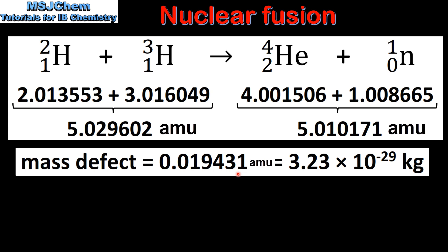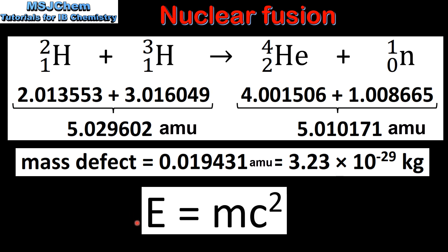This mass defect is given in unified atomic mass units which we can convert to kilograms. Next we can use the equation E equals MC squared to calculate the energy released in the fusion reaction.